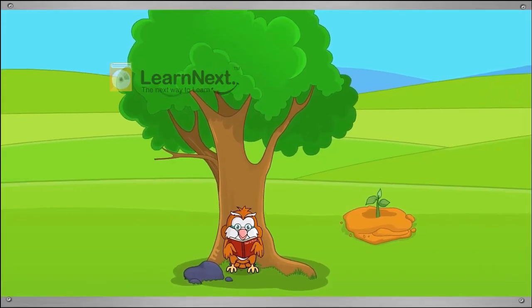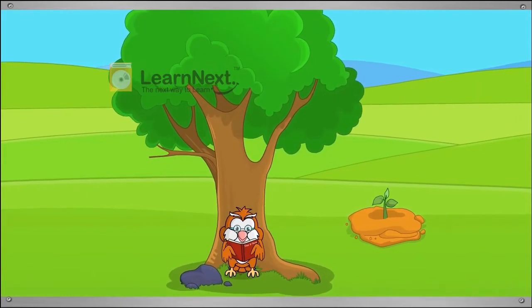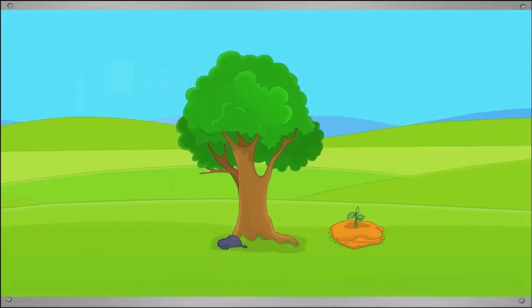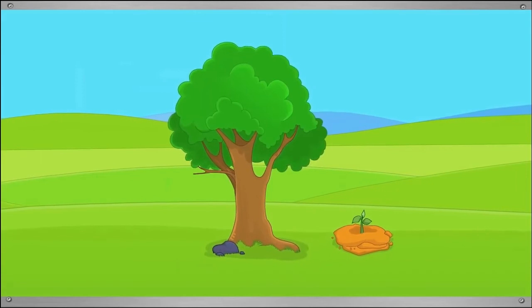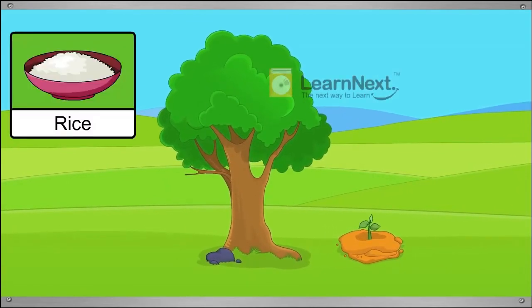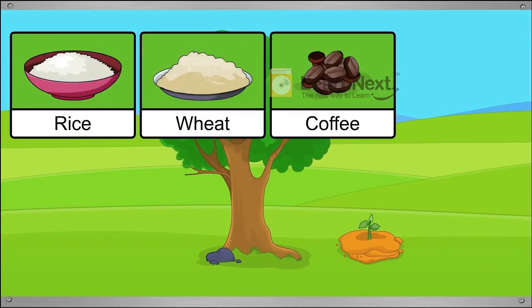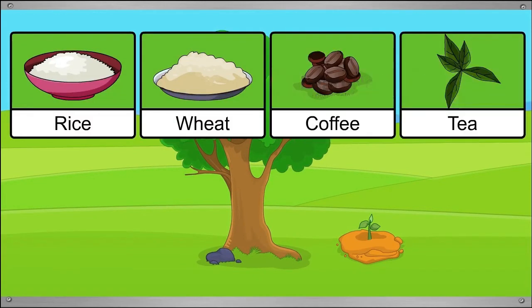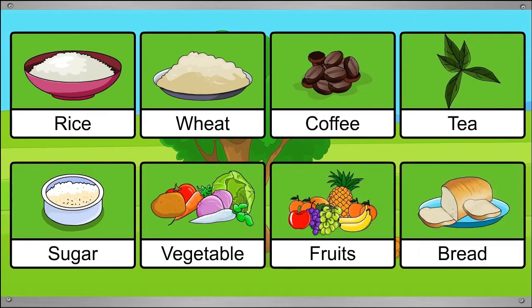Plants grow from seeds. Plants give us food, cereals and grains, like rice, wheat, coffee, tea, sugar and other things that are good.